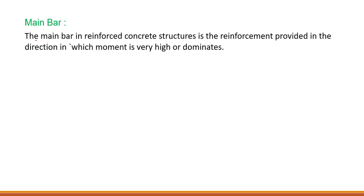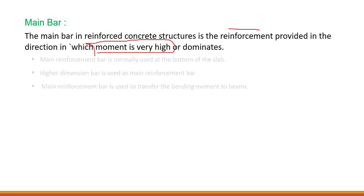First, let's look at what a main bar is. The main bar in a reinforced concrete structure is a reinforcement provided in the direction in which the moment is very high or dominant. Main reinforcement bar is normally used at the bottom of the slab, and the diameter of this bar will be greater than the diameter of the distribution bar.